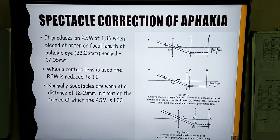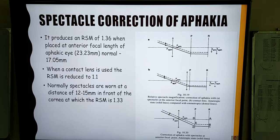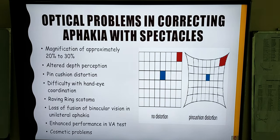The anterior focal length of the aphakic eye switches to 23.23 mm compared to the normal value of 17.05 mm. For aphakia, when a contact lens is used, the relative spectacle magnification is 1.1, which is very close to the image of the emmetropic eye. However, when the lens is placed at the anterior focal length, the relative spectacle magnification is 1.36. Since spectacles are usually worn at 12 to 15 mm from the eye, at this position for an aphakic eye the convex lens exerts a spectacle magnification of 1.33 — that is, one third of the image will be enlarged with the use of aphakic spectacles.